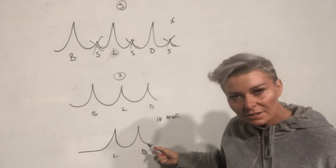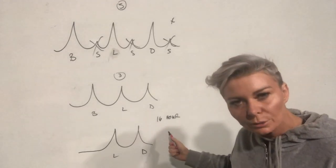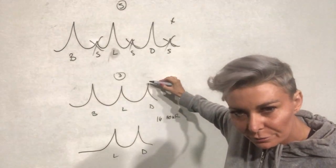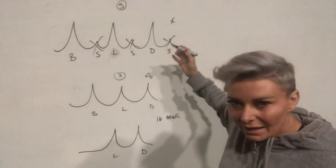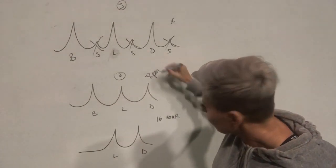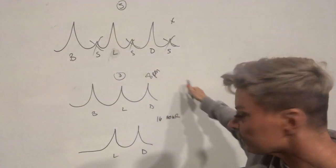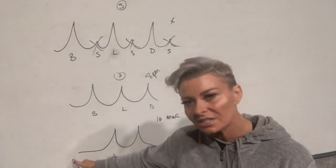Now if we go down to this diagram, this is on a 16-hour fast. So for example, if this was your evening meal the night before, approximately say 8pm, if you're going to do a 16-hour fast, which you are this week, you would fast for 16 hours, so you would skip breakfast.